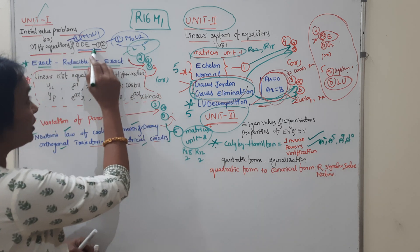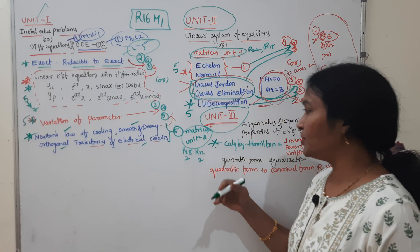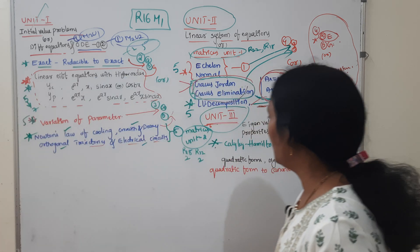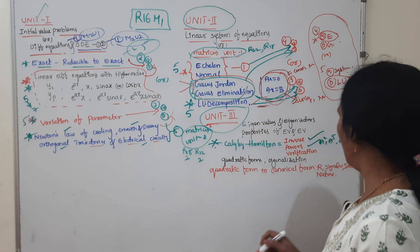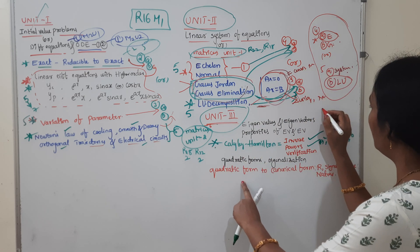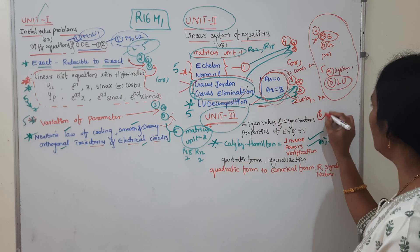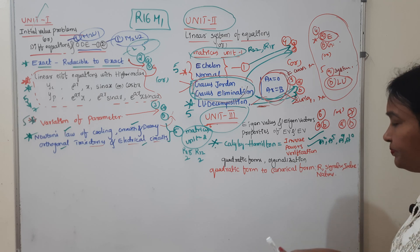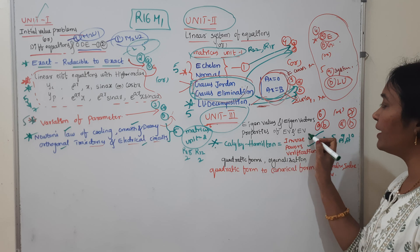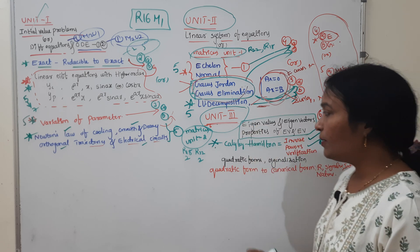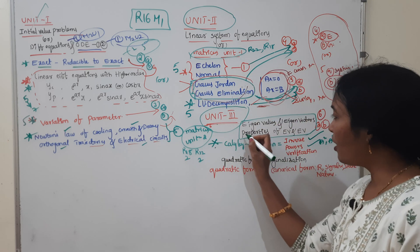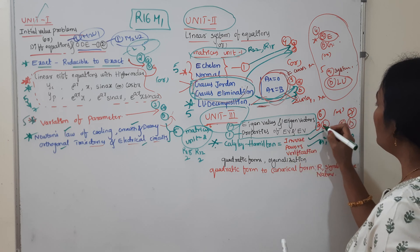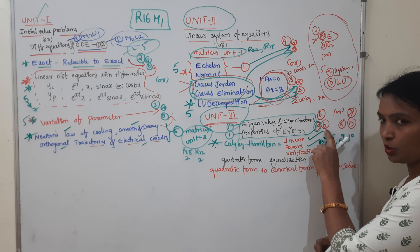I am going to talk about the regulations already. Now the 3rd unit — I am going to talk about Cayley-Hamilton. Where is Cayley-Hamilton? It is in questions 4-5 or 6-7. Question number 6 is 7, with option A and B. Eigen values, eigen vectors, and properties of eigen values — it is a short question. Properties and eigen values, eigen vectors.